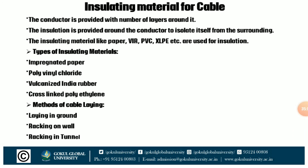Now we discuss about the insulating material used for cable. The conductor is provided with a number of layers around it; insulation isolates the conductor from the surrounding. Insulating materials like paper, VIR, PVC, or XLPE are used. There are mainly four types of insulating material: first, impregnated paper; second, polyvinyl chloride (PVC); third, vulcanized India rubber (VIR); and fourth, cross-linked polyethylene (XLPE).